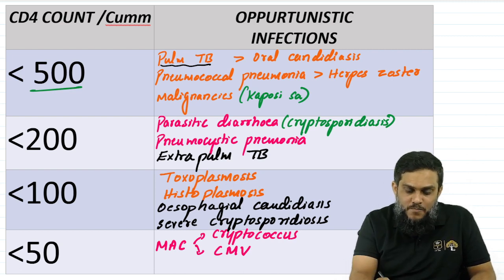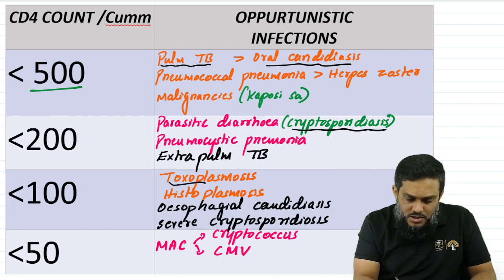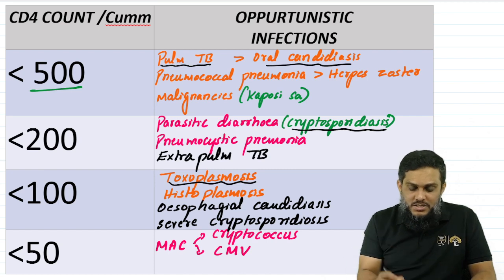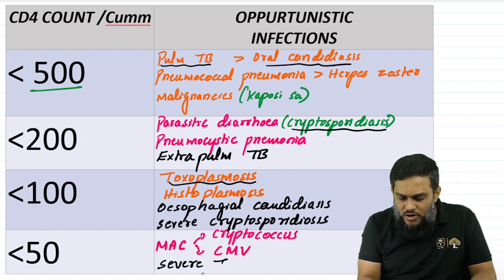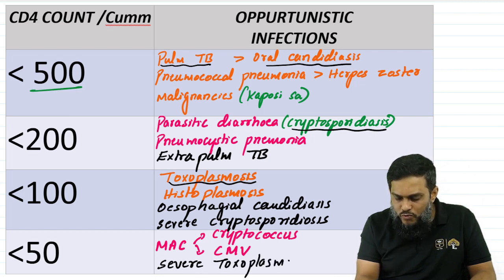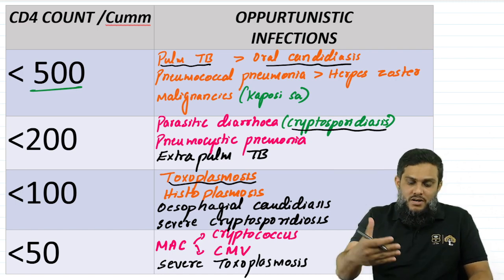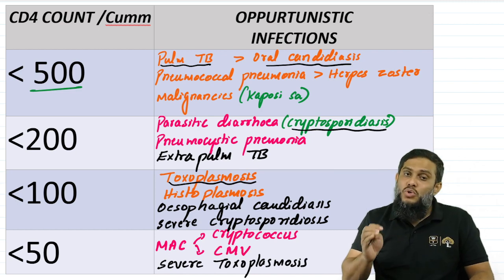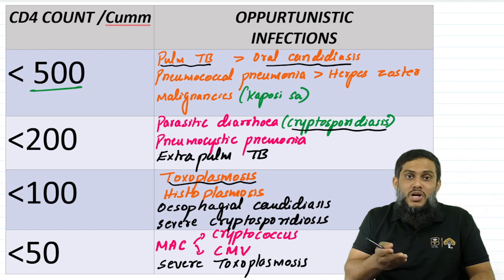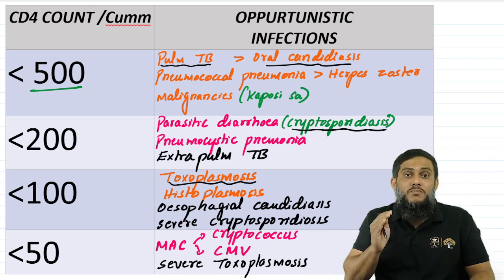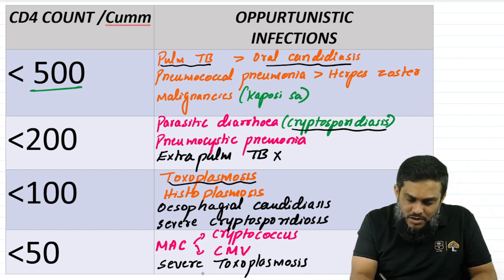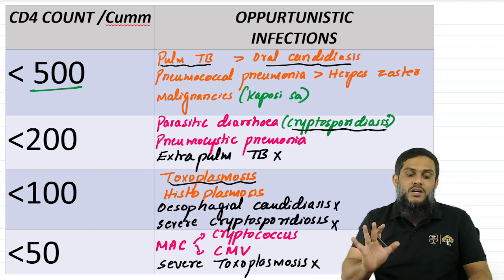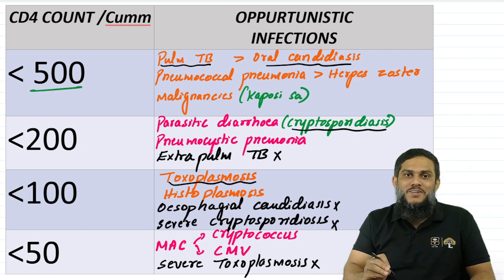Toxoplasmosis is seen when CD4 count falls below 100, but the severe form is seen when CD4 count falls below 50. The same disease appears at two different thresholds based on severity, which causes confusion. The advice: don't try to memorize the severe-form variants written in black — stick to the important primary associations, otherwise you will get confused.